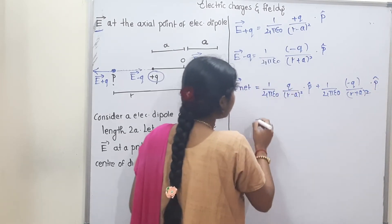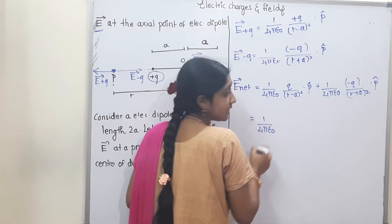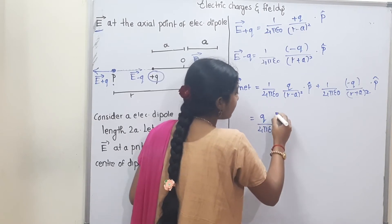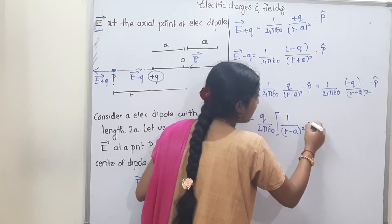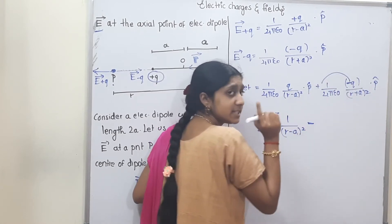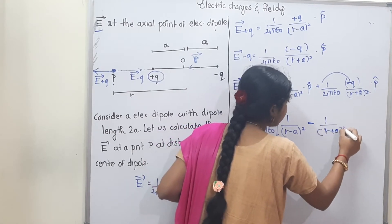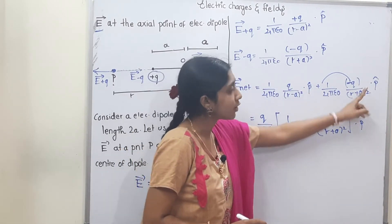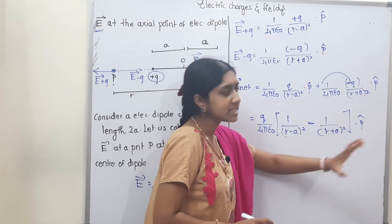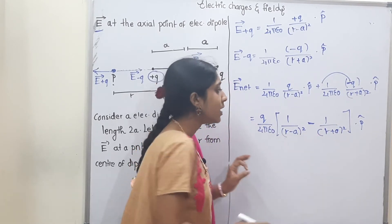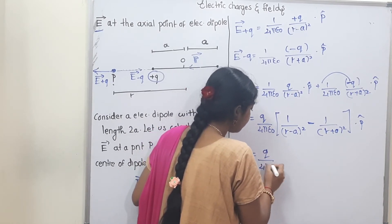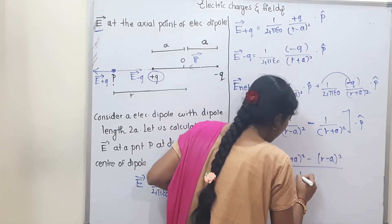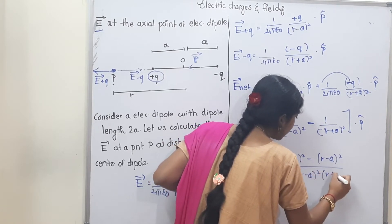The total net electric field at point P is: E_net = 1/(4πε₀) × [ q/(r−a)² − q/(r+a)² ] × p̂. Taking 1/(4πε₀) as common, and finding the LCM of (r−a)² and (r+a)², we get: E_net = q/(4πε₀) × [ (r+a)² − (r−a)² ] / [ (r−a)² × (r+a)² ] × p̂.